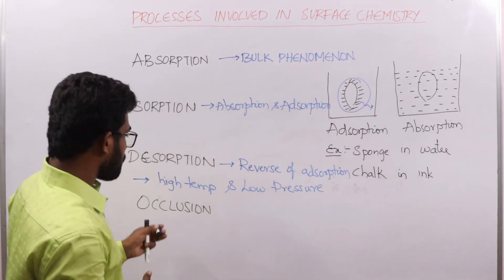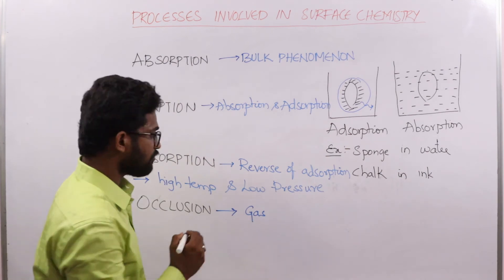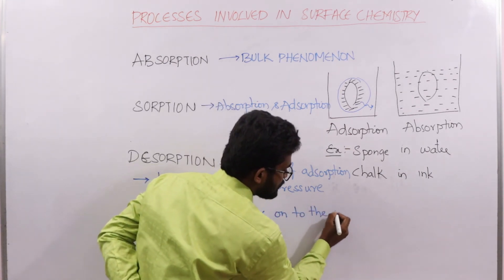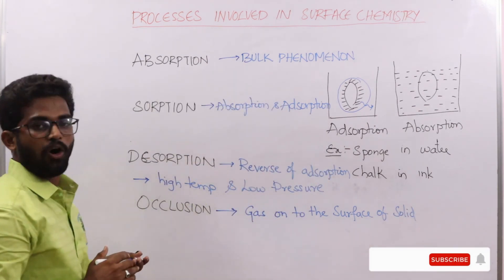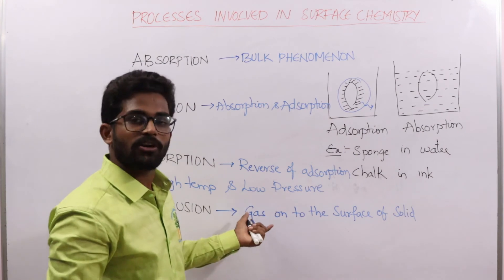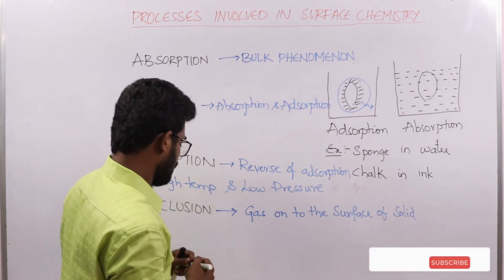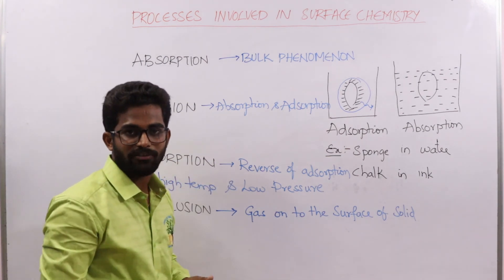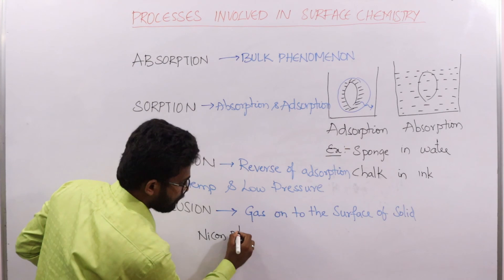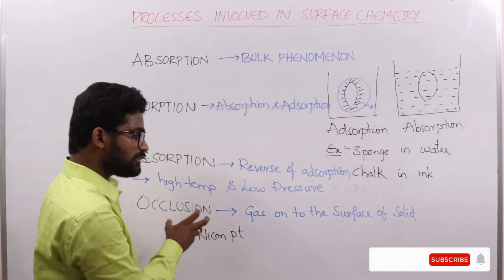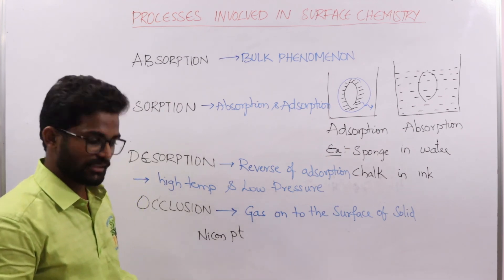Coming to occlusion — occlusion is the deposition of gas molecules onto the surface of a solid. In other terms, the adsorption of gas onto a solid is called occlusion. For example, in the hydrogenation of oils, we use catalysts such as nickel or platinum to stabilize hydrogen molecules for effective hydrogenation, and the occlusion process is involved in this.